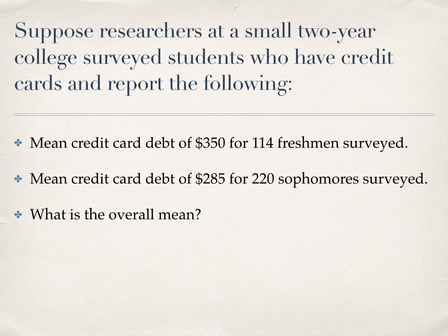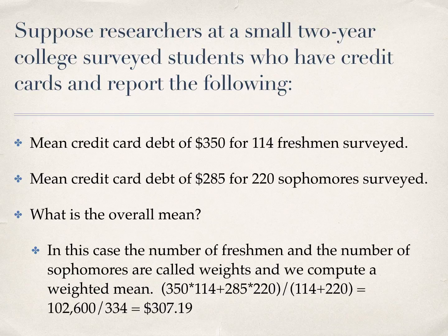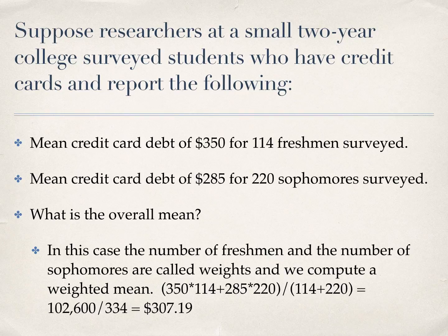So let's see how you would compute a weighted mean. Like the name implies, there are always weights. The weights in this case are the number of freshmen and the number of sophomores. We compute the weighted mean by taking each number times its weight, adding them up, and dividing by the sum of the weights. That gives us $350 times 114 plus $285 times 220, which sums to $102,600, divided by 334 total students.